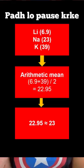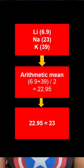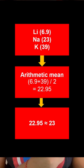When we talk about their postulates, they said that the middle-most element's mass will be the average of the rest. If you take the first and last element and find their arithmetic mean, the average gives you the mass of the middle element.